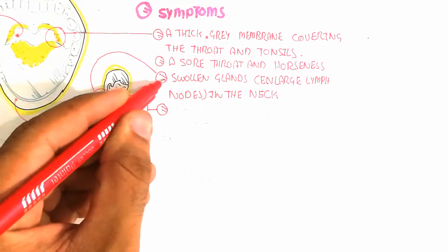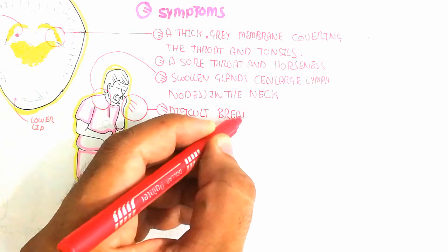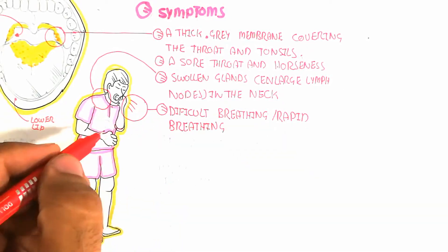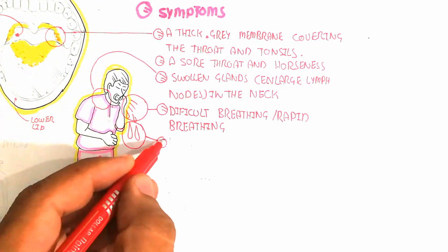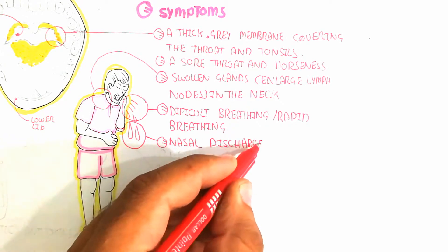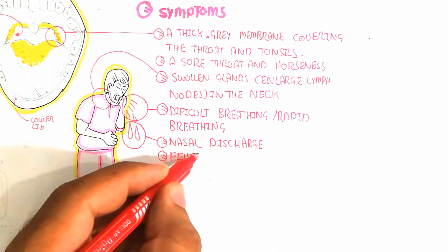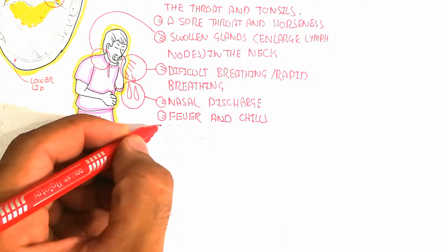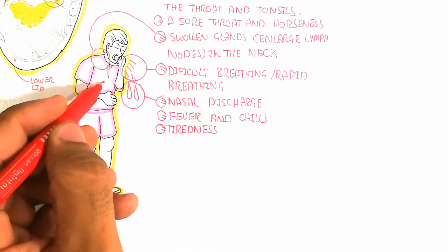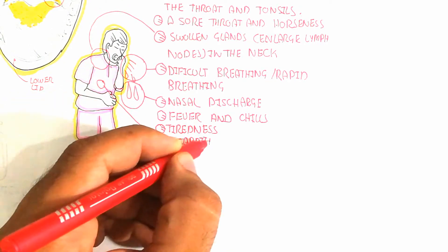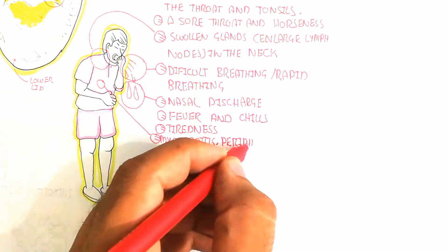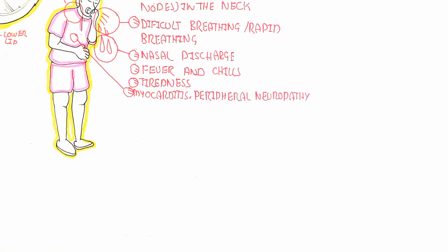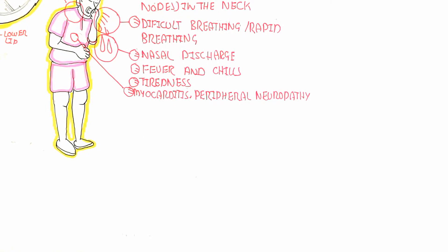On the other hand, difficult breathing occurs due to enlargement of the lymph nodes, leading to respiratory tract distress. The respiratory tract distress syndrome leads to difficult breathing, rapid breathing, nasal discharge, fever, and chills. Tiredness also occurs due to the chills and fever, as well as myocarditis, which leads to tachycardia and peripheral neuropathy.